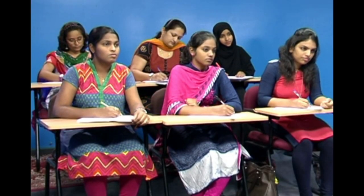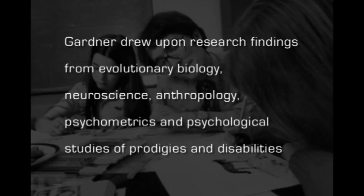Gardner's conception of intelligence grew out of his observation that individuals who demonstrated substantial talent in domains as diverse as chess, music, athletics, etc., possessed capacities in their domains that should be accounted for in conceptualizing intelligence. Accordingly, in developing MI theory, Gardner drew upon research findings from evolutionary biology, neuroscience, anthropology, psychometrics, and psychological studies of prodigies and disabilities. Through synthesis of relevant research across these fields, Gardner established several criteria for identification of unique intelligence.